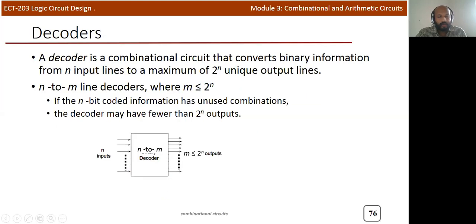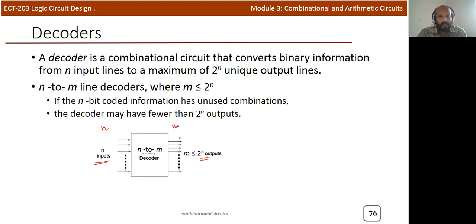The basic structure of a decoder contains n inputs and 2-to-the-n output lines, but there are not always 2-to-the-n outputs — it can be less. So we use another variable m, where there are n inputs and m outputs. m can take a maximum of 2-to-the-n. We call it an n-to-m line decoder, where m is less than or equal to 2-to-the-n. The decoder is a combination circuit that converts binary information from n input lines to 2-to-the-n unique output lines, and there may be some unused combinations.